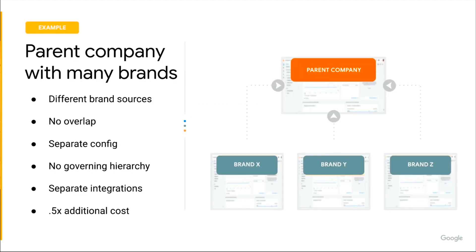We'll end with a few examples and then a demo. This first example shows a very classic case: we have multiple brands and then a portfolio company over the top controlling all of those brands. There's no overlap between these brands, which is pretty important in this example. If there was an overlap — some fourth property that all of these would share — that would likely be broken out in a fourth property and then again rolled up to make the full parent company view. There's no governing hierarchy, and it does come with the 0.5 per event additional cost.